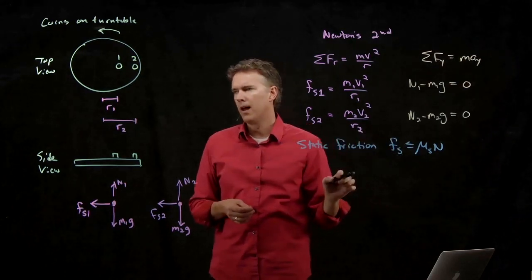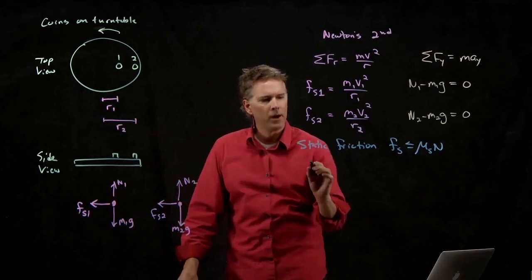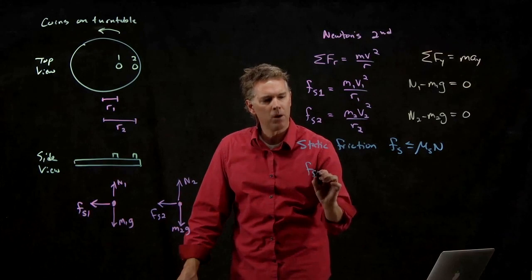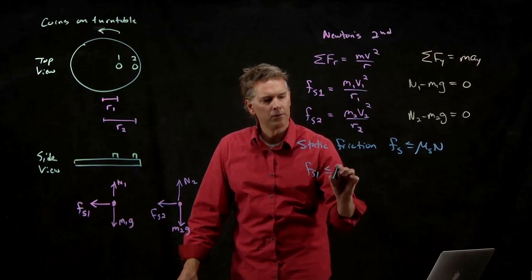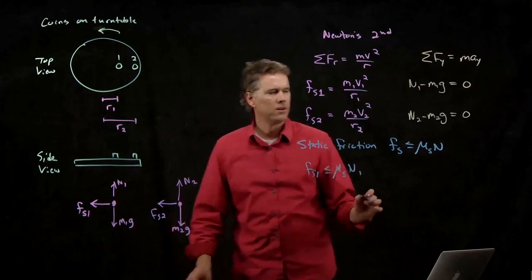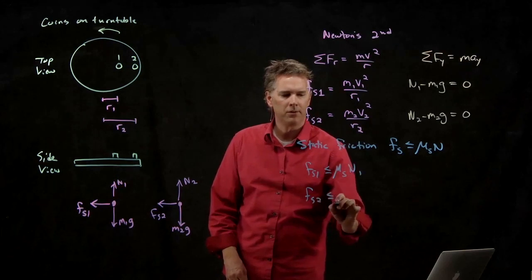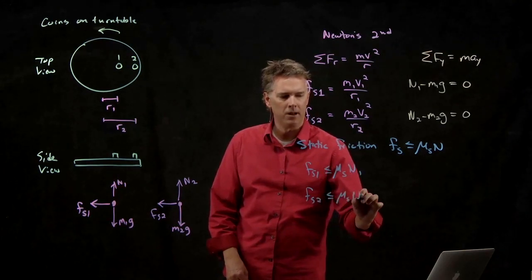And that's when the coins then fly off the table. So what is F sub s1? It's less than or equal to mu s times n1. F sub s2 is less than or equal to mu s times n2.